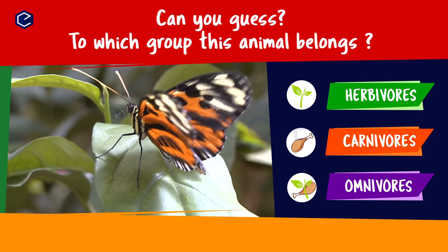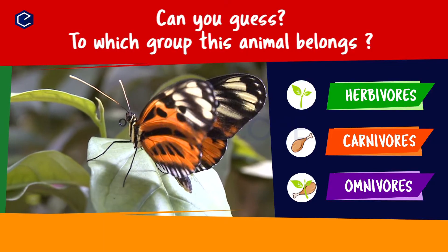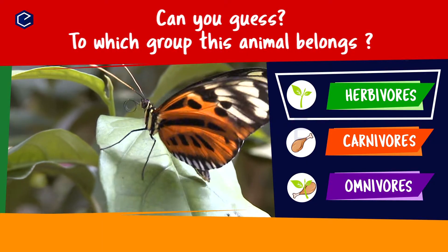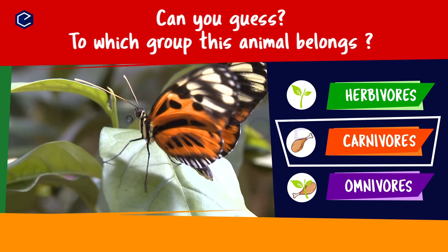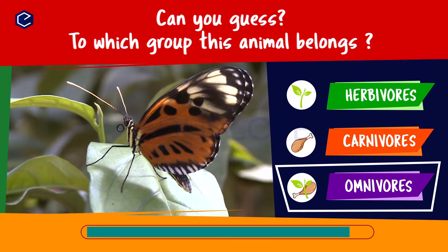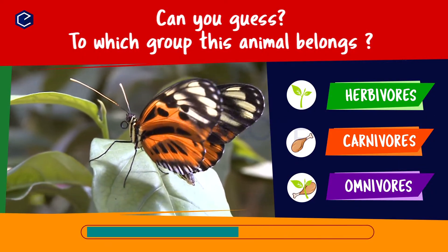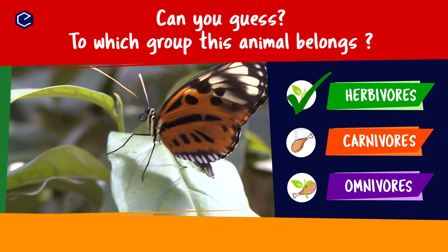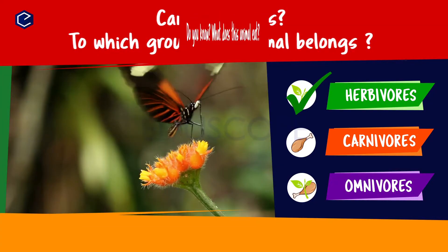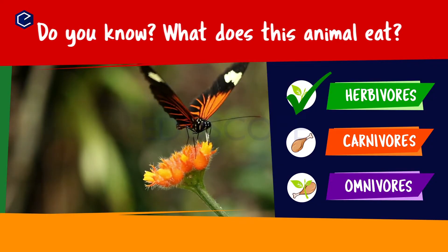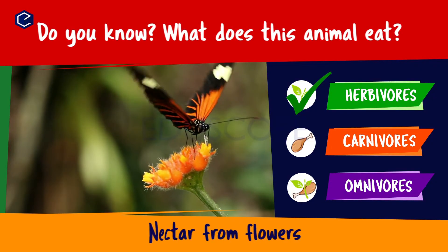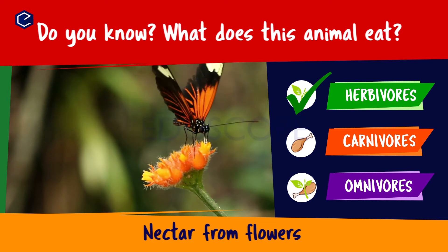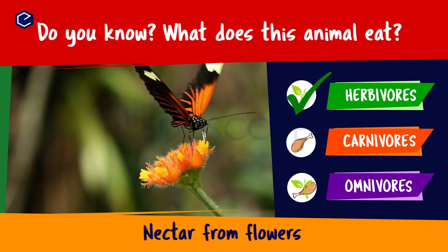Can you guess to which group this animal belongs? Herbivores, carnivores, omnivores. Do you know what this animal eats? A butterfly eats nectar from flowers. So butterfly is a herbivore.